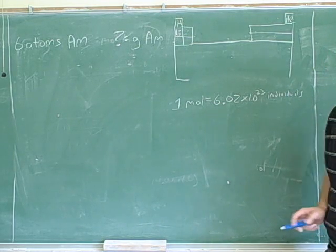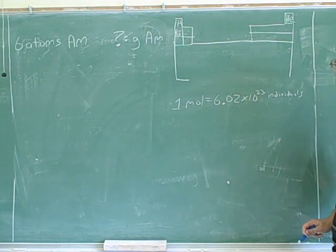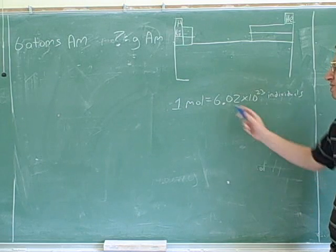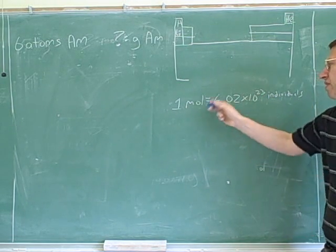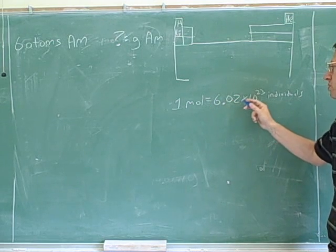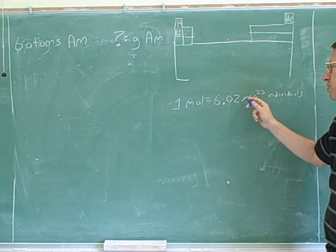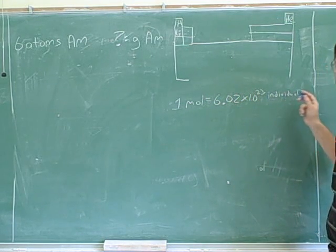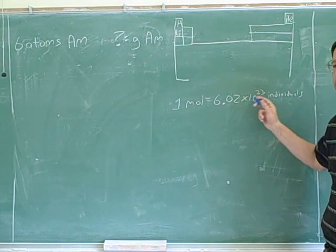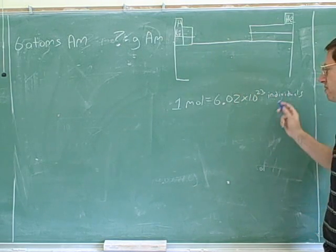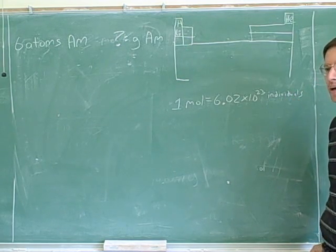For example, if you have a mole of eggs, that would be 6.02 times 10 to the 23rd eggs. Or if you have a mole of molecules, that would be 6.02 times 10 to the 23rd molecules. Or if you have a mole of atoms, that would be 6.02 times 10 to the 23rd atoms. If you have one mole of neon atoms, that would be 6.02 times 10 to the 23rd neon atoms. Or if you have a mole of water molecules, that would be 6.02 times 10 to the 23rd water molecules. So you have to fill in what is a reasonable word for these individuals here, depending on what you're working with.